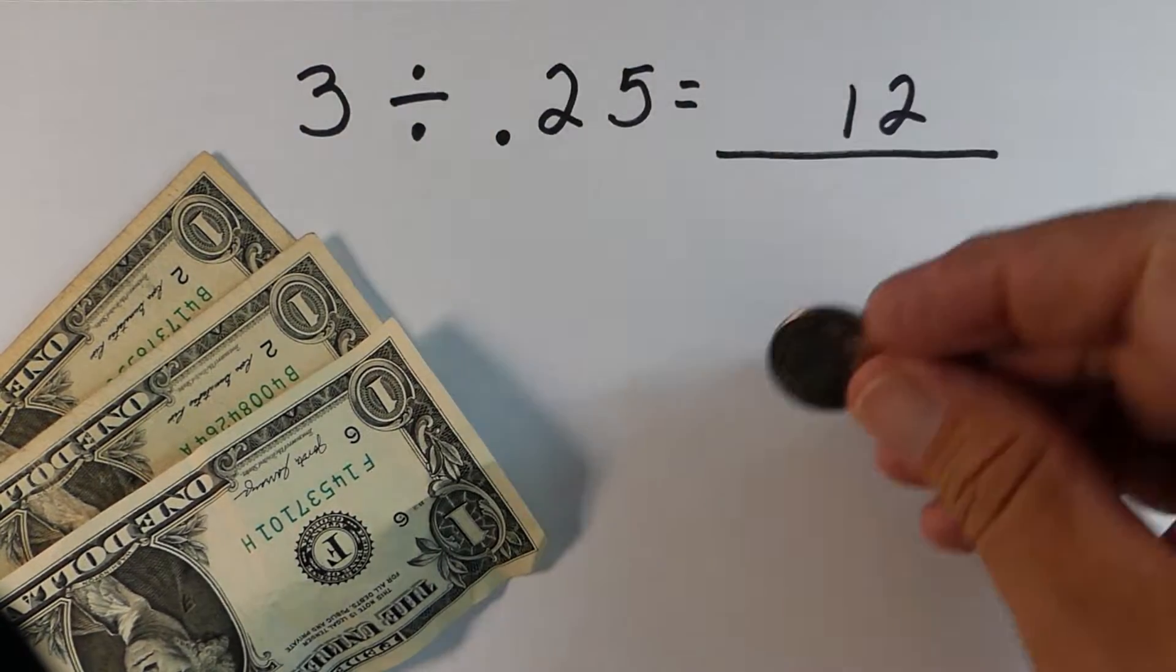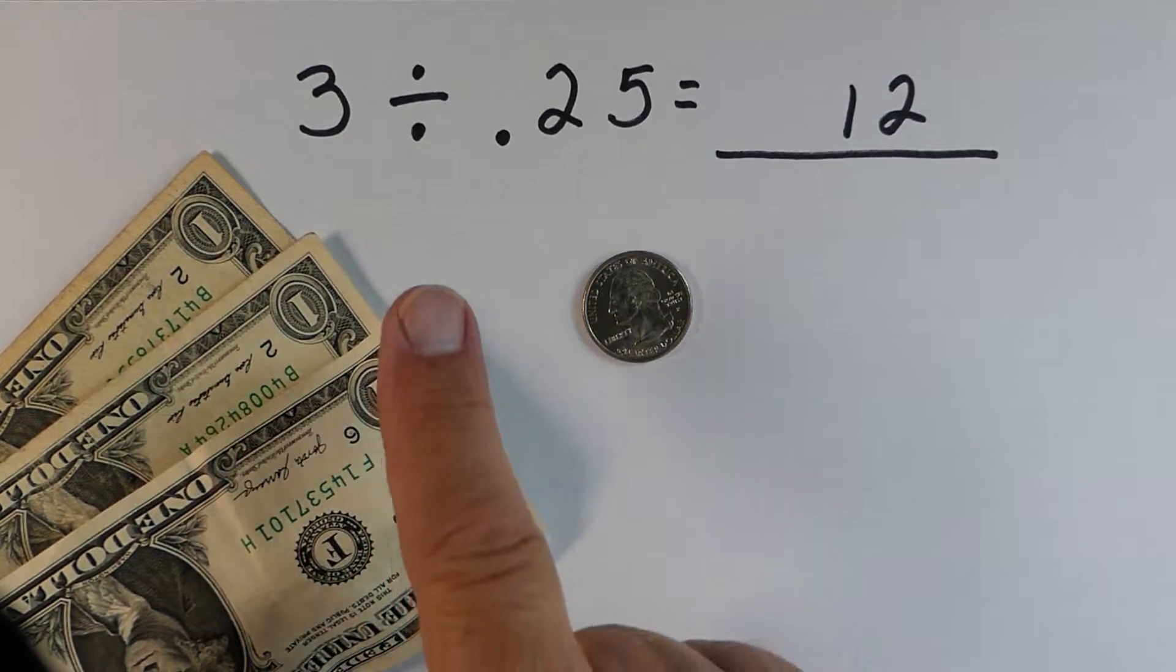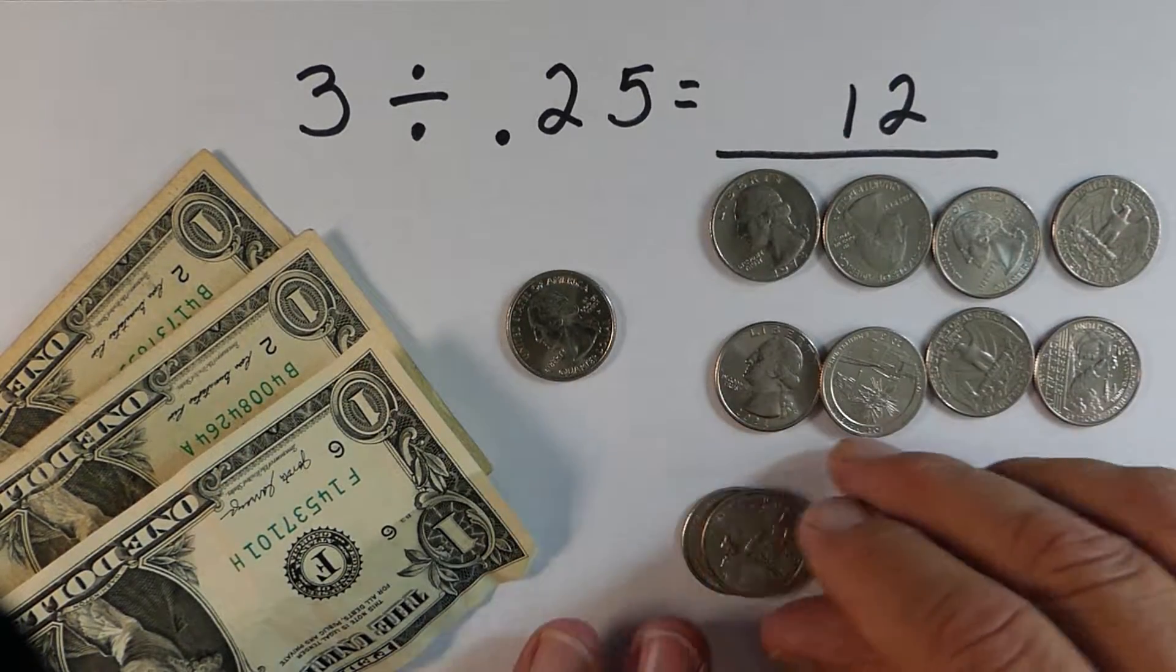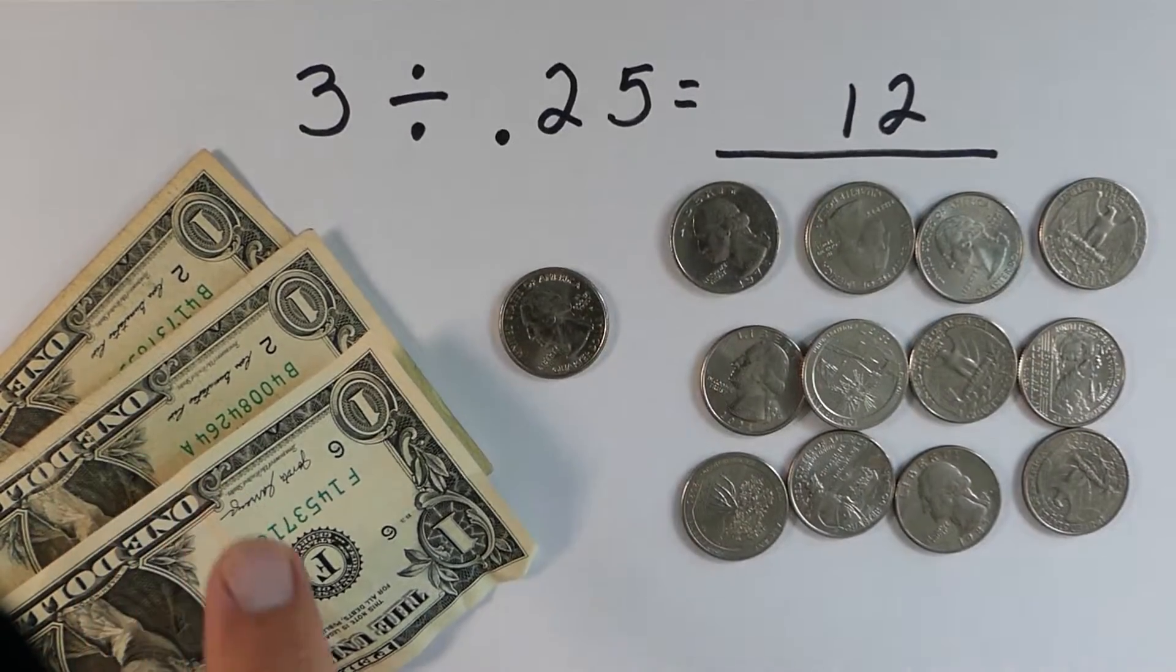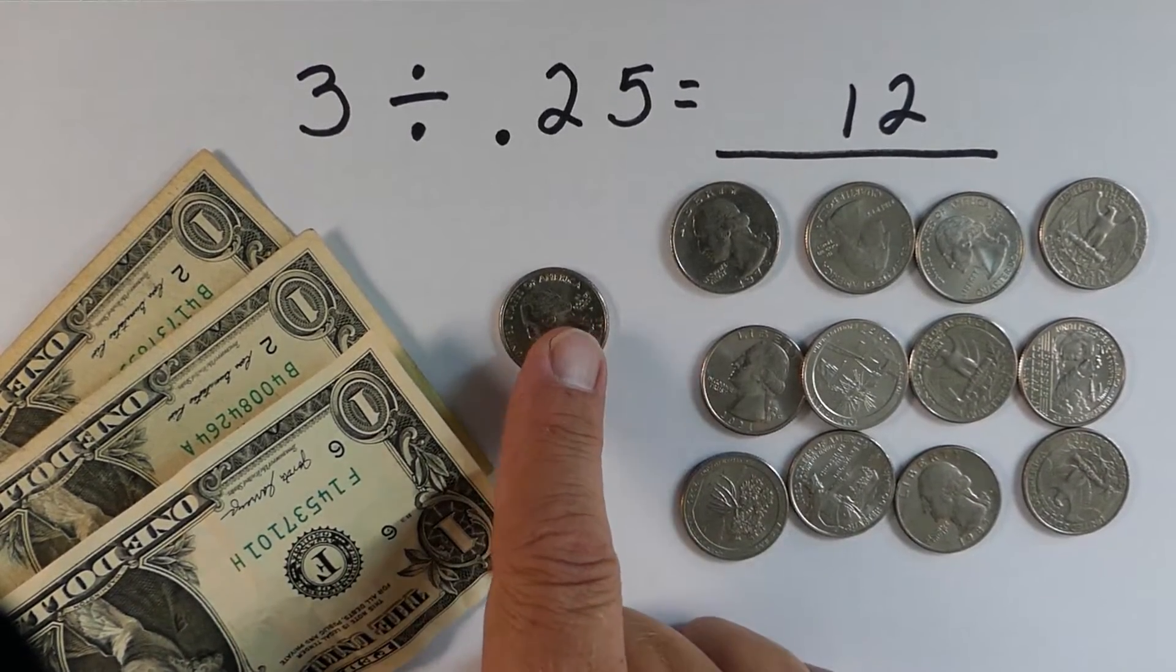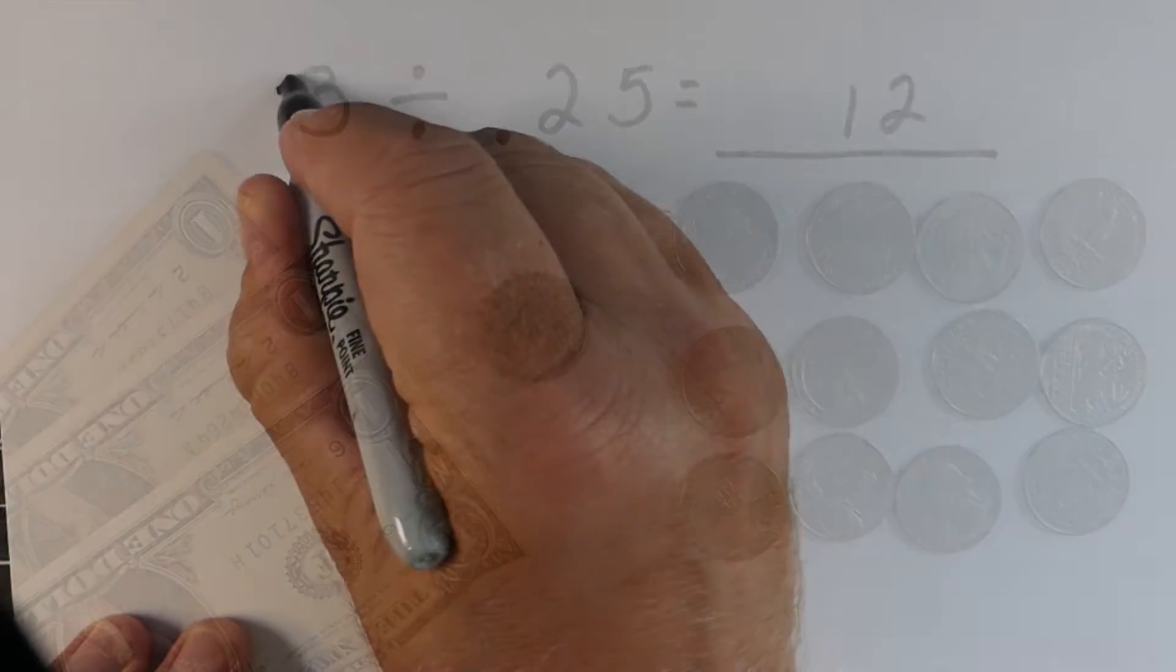So let's use a little U.S. currency here. So if we start with 3 dollars and we divide it by 0.25, that would be like saying 25 cents. And if we took 3 dollars and we divide it by 25 cents, you can see here that we have 12 different quarters. So 3 divided by 0.25 or 25 cents would be 12.